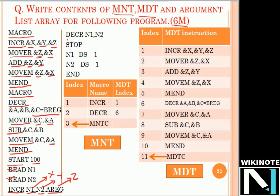Next, we call the second macro DECR. In DECR's definition, one parameter C has a default value, so only two parameters are passed — N1 and N2. N1 takes the place of A and N2 takes the place of B. The last instruction is STOP. We declare two storages: N1 DS (declare storage) for one byte and N2 DS for one byte, and the program ends. So this is the input to the macro processor, which has two macro definitions and two macro calls.